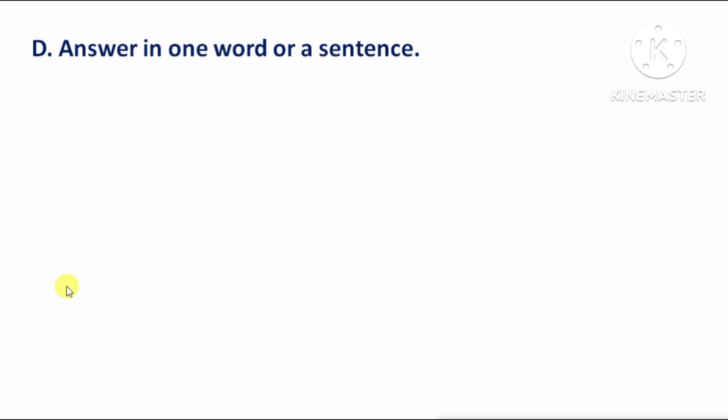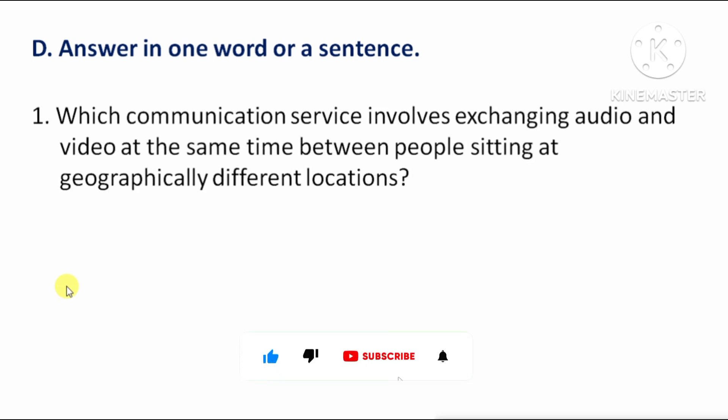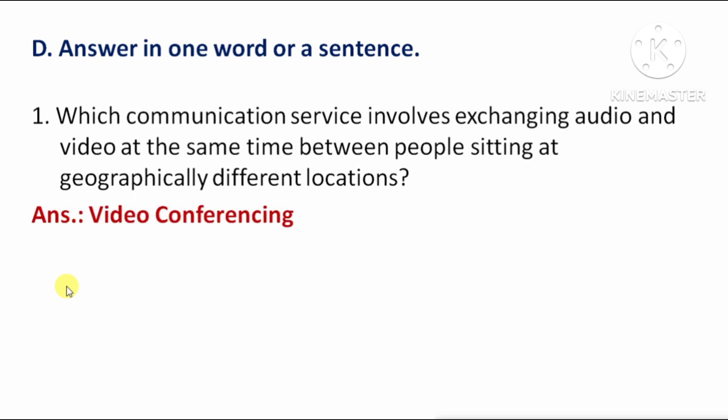Answer in one word or a sentence. First question: Which communication service involves exchanging audio and video at the same time between people sitting at geographically different locations? — means kaun si communication service hai jisme audio aur video ka ek saath exchange possible hai un logon ke beech jo geographically different locations par baithe hote hain? The answer is: video conferencing.